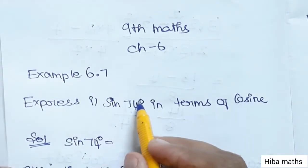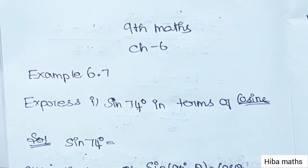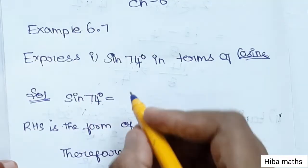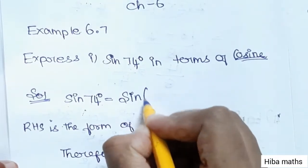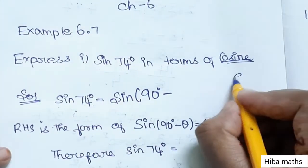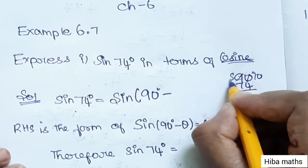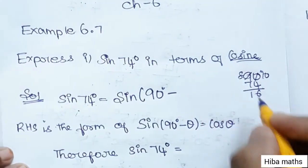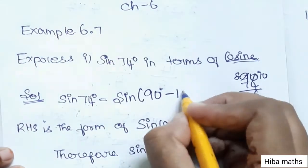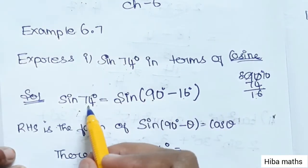Express sin 74 degree in terms of cosine. So sin with cosine we change. Sin 74 degree — so sin 90 degree minus 74.